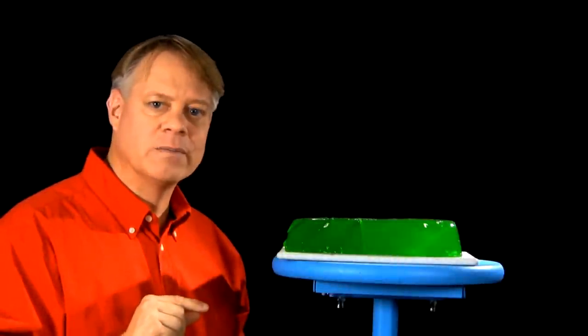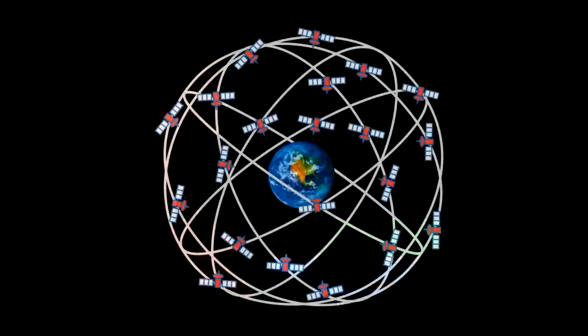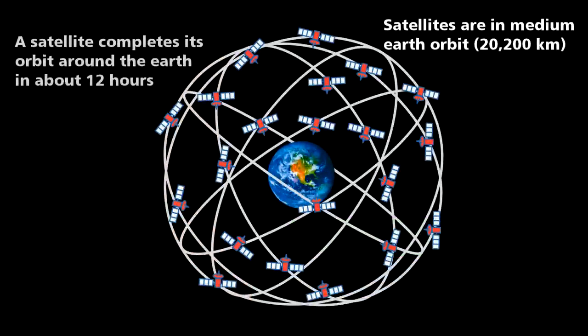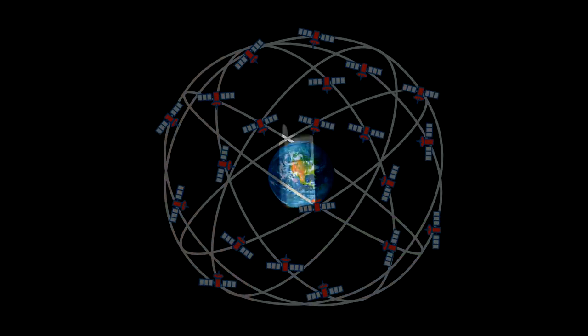Our world runs off such accuracy. For example, the global positioning system, GPS, requires it. The global positioning system consists of 24 satellites orbiting the earth.